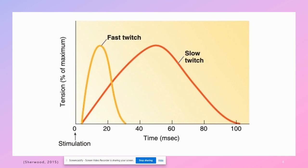Here's that graph I mentioned. We see the time it takes for the fast twitch muscle to reach its maximum tension — it's very quick, that yellow line, with ATP cycling and the cross bridge pulling faster. The slow twitch, however, takes longer for the ATP to split and for the cross bridge to actually pull the muscle to contract. It takes more time, but that energy is stored better — it's slower to fatigue and you can use those muscles longer.